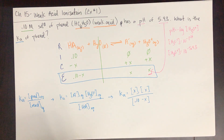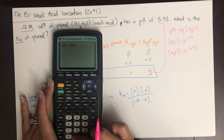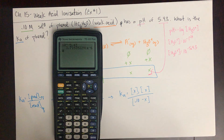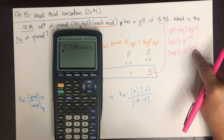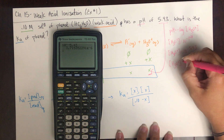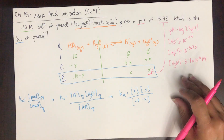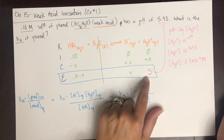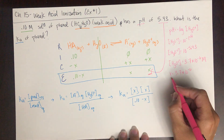Calculating 10 to the negative 5.43 gives 3.72 times 10 to the negative 6. Because this pH has two decimal places, my concentration will have two significant figures, so the hydronium ion concentration equals 3.7 times 10 to the negative 6 molar at equilibrium. Since the hydronium ion concentration at equilibrium is x, that means x equals 3.7 times 10 to the negative 6.